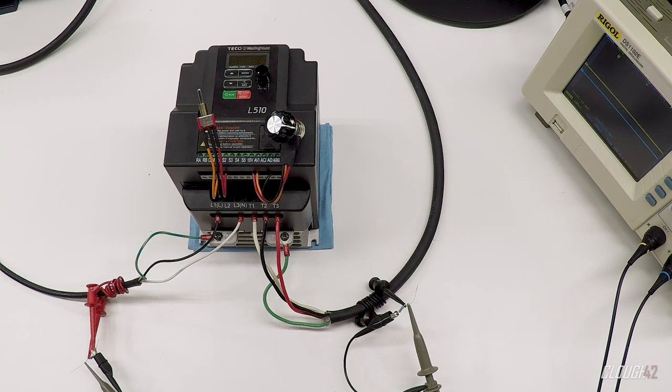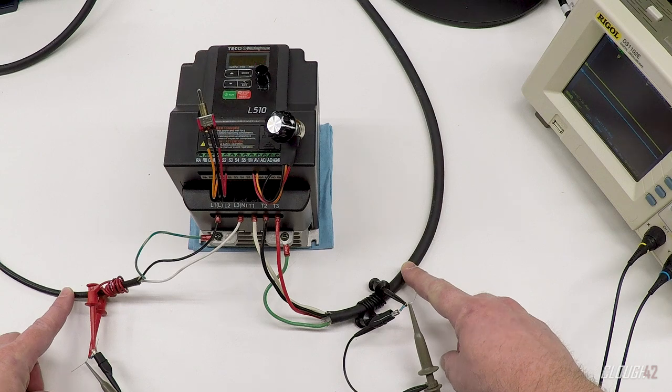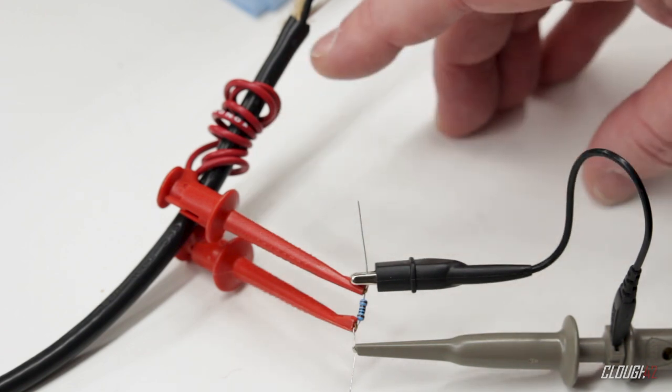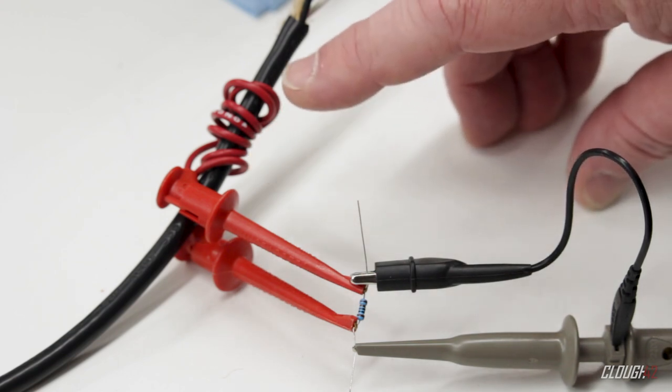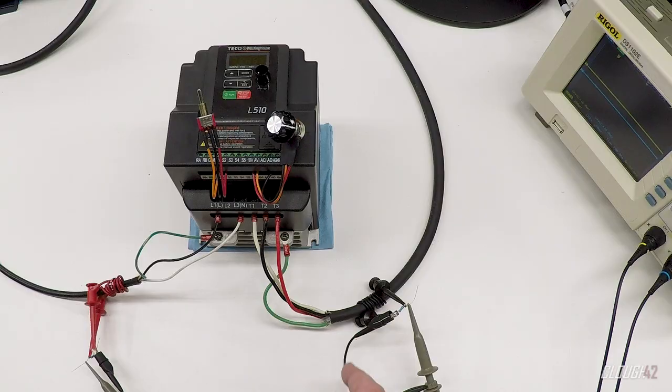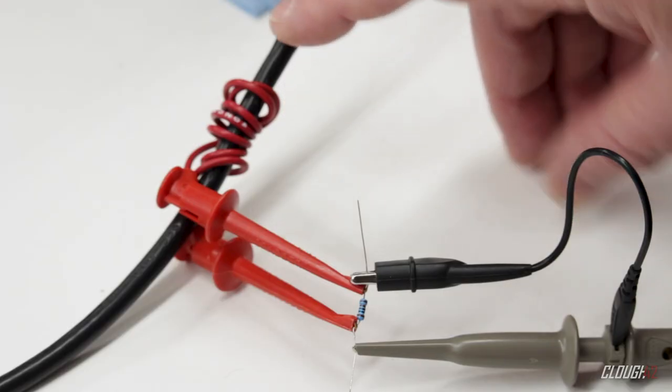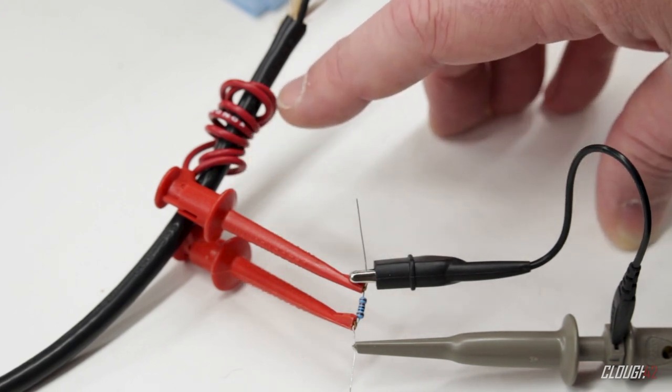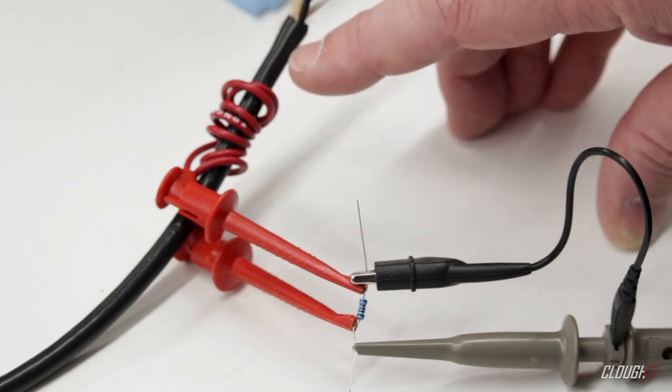Before we start trying to fix the problem, let's see if we can measure it. So what I've done is both on the motor lead and on the line cord, I have formed a current transformer. Now this is just a coil of wire. In this case, it's just a test lead that's wrapped around the line cord eight times. Same over here with the motor lead. And why eight times? Because that's the length of the test lead wire.